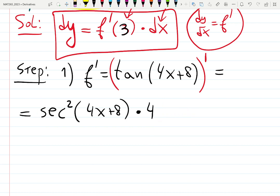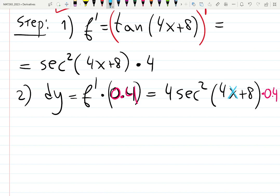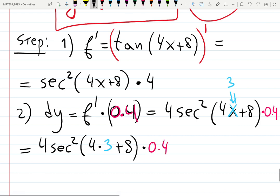For now we just found f prime. Step 2. Step 2 is the answer. dy equals f prime times 0.4. Because it was given. So, it's going to be 4 secant squared, 4x plus 8, times 0.4. But what happened with f? We need to plug in, I did not plug 3. So, equals, let me write down 3. 3 was given. 4 secant squared, 4 times 3. Whatever is in color is given. 0.4 was given.